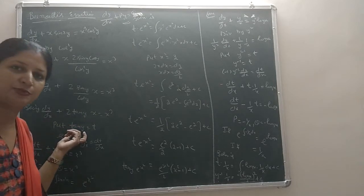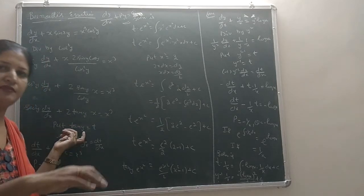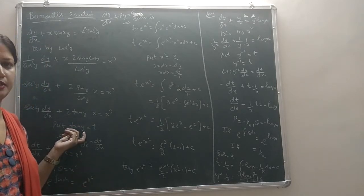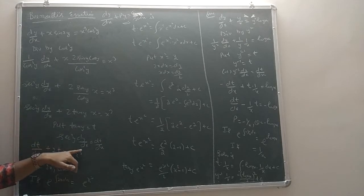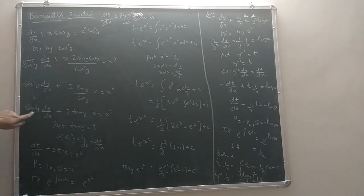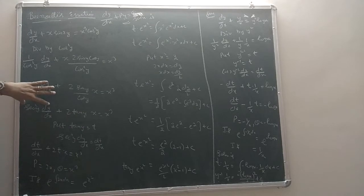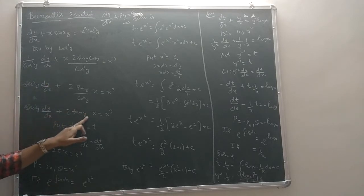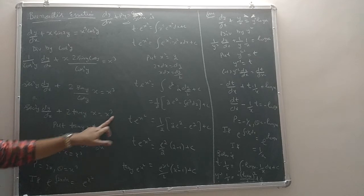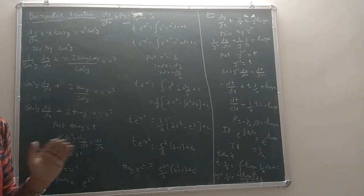We substitute tan(y) = t. With this substitution, the whole equation becomes dt/dx plus 2x·t equals x³. This is now a standard linear ODE in t.